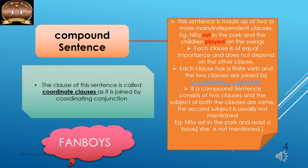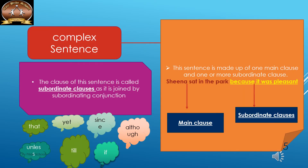The coordinating conjunctions are remembered as FANBOYS. To make a complex sentence from two simple sentences, add a subordinating conjunction. One clause will be the main clause and the other will be the dependent clause. For example, 'Sheena sat in the park because it was pleasant' — 'Sheena sat in the park' is the main clause, and 'because it was pleasant' is the subordinate clause, starting with the subordinating conjunction 'because' and depending on the main clause.